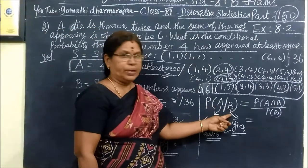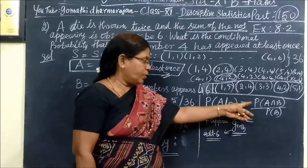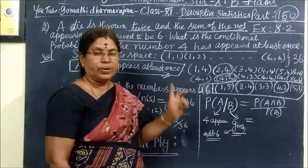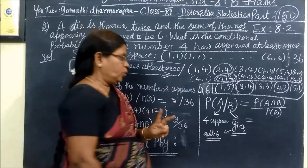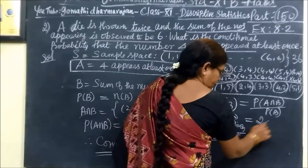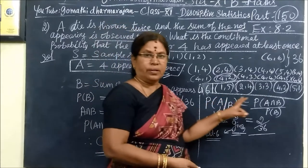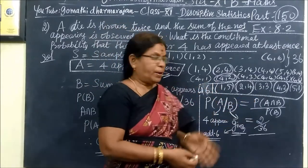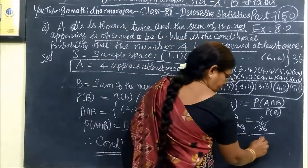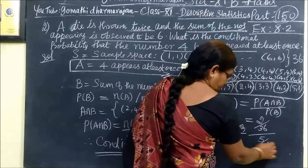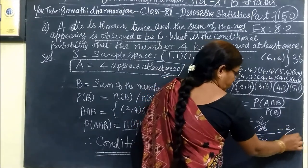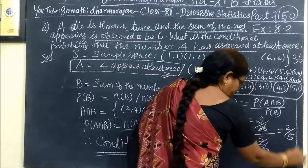P of A given B. P of A intersection B by P of B. A intersection B is equal to 2. 2 by 36, divided by P of B. If you add 6, it will be equal to 5 by 36. The answer is 2 by 5. This is the first step.